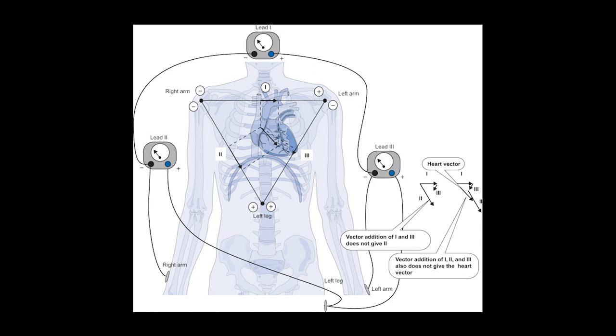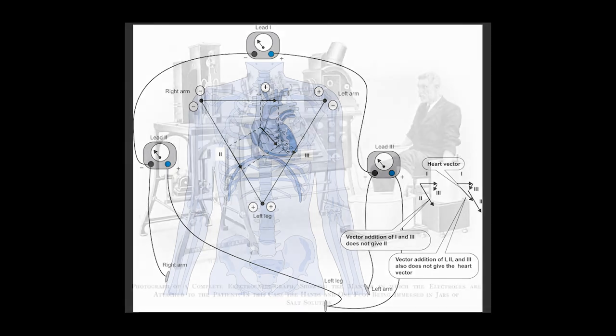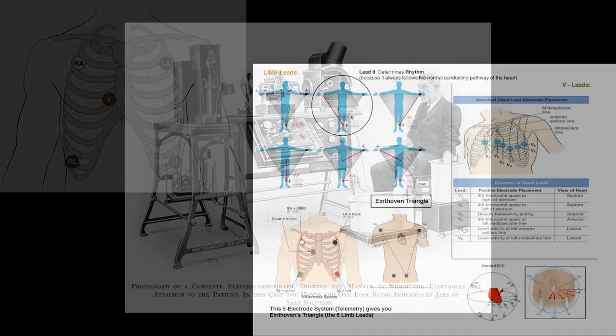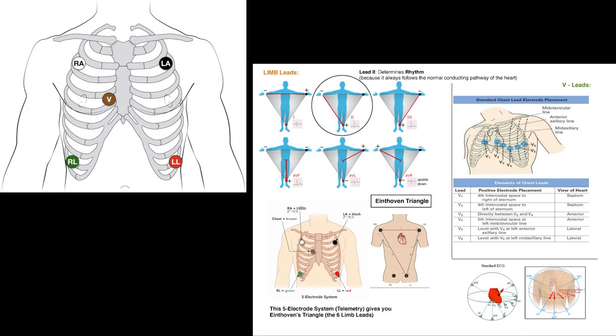William Einthoven theorized this triangle of leads in the late 1800s, from the right arm to the left arm to the left leg, using a string galvanometer — the first generation of ECG machine. The five lead configuration uses right arm, left arm, right leg, left leg, and V1.